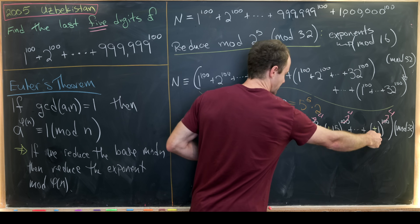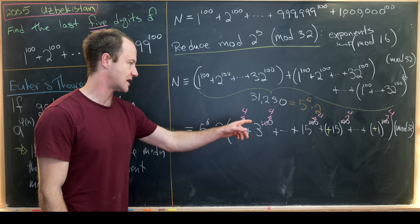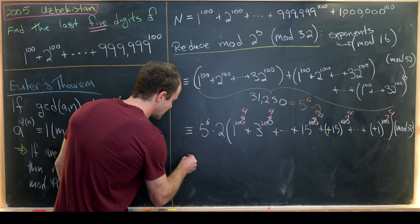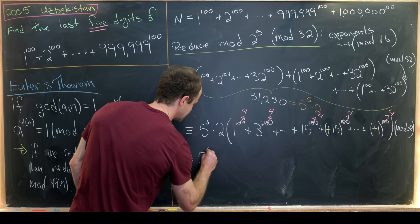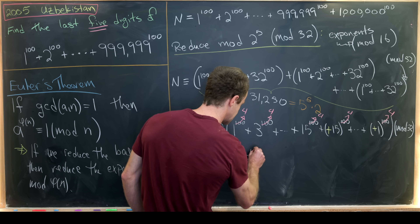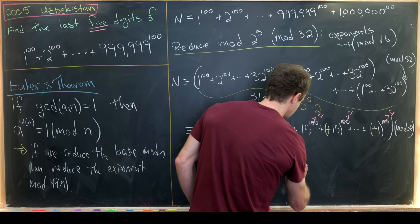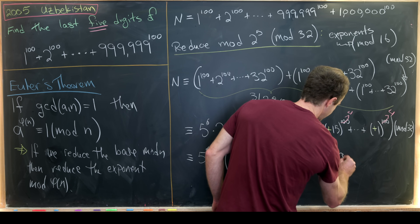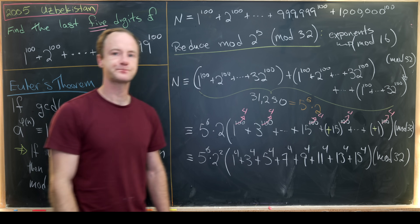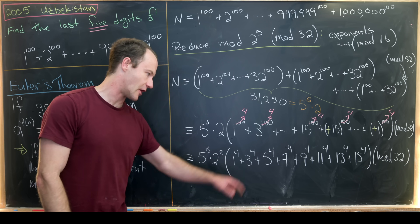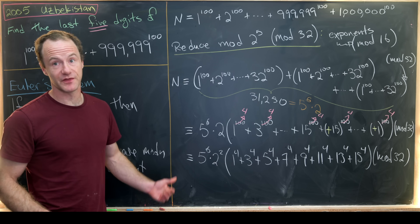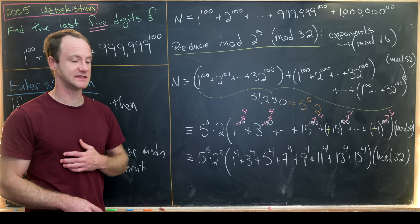We can add corresponding copies together and get 2 × (1^4 + 3^4 + 5^4 + 7^4 + 9^4 + 11^4 + 13^4 + 15^4). Combining that factor of 2 with the existing 2 from the chunk count gives 2^2. Now: 1^4 ≡ 1, 7^4 ≡ 1, 9^4 ≡ 1, and 15^4 ≡ 1 (mod 32). The remaining values — 3^4, 5^4, 11^4, 13^4 — each reduce to 17 mod 32.